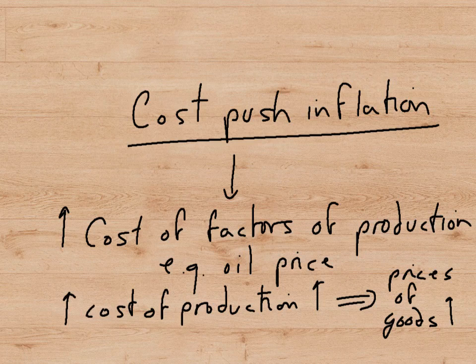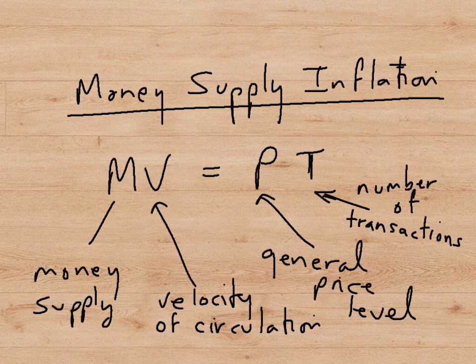Cost push inflation occurs when there is an increase in the cost of factors of production — such as oil — which leads to an increase in the actual cost of production. This means goods are sold at higher prices because they cost more to produce. Cost push inflation is simple to understand.